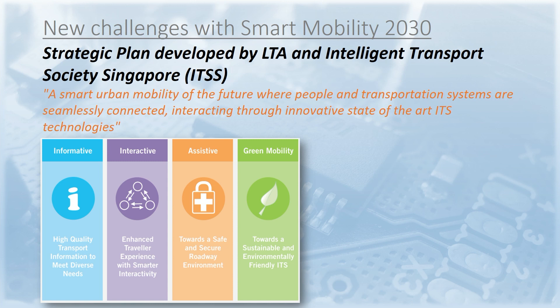The new Smart Mobility is built on four pillars: information, interaction, assistance, and ecology. More precisely, it will use high-quality transport information to meet diverse needs. Smart interaction will support enhanced traveler needs. Assistive technologies will ensure a safe and secure road environment. And last but not least, green technologies will provide a sustainable and environmentally friendly transportation system.